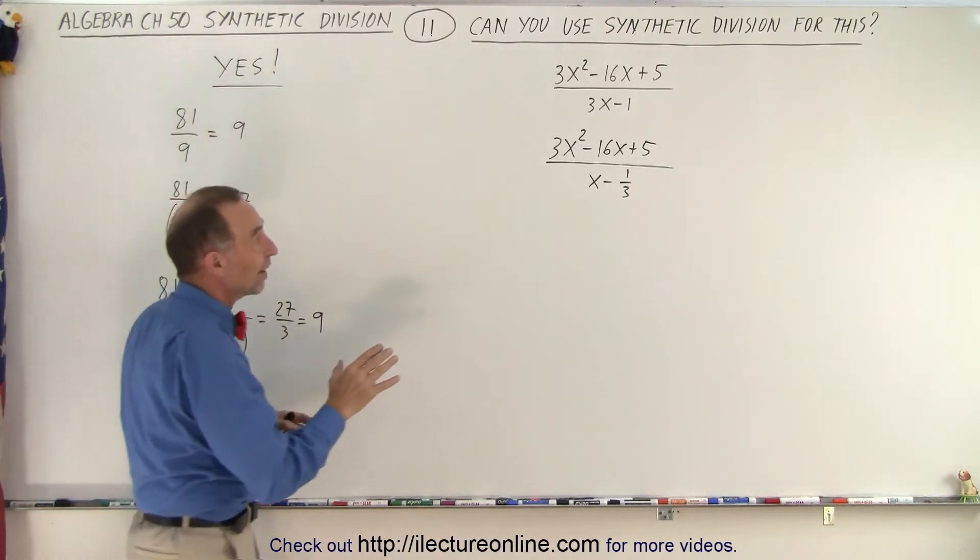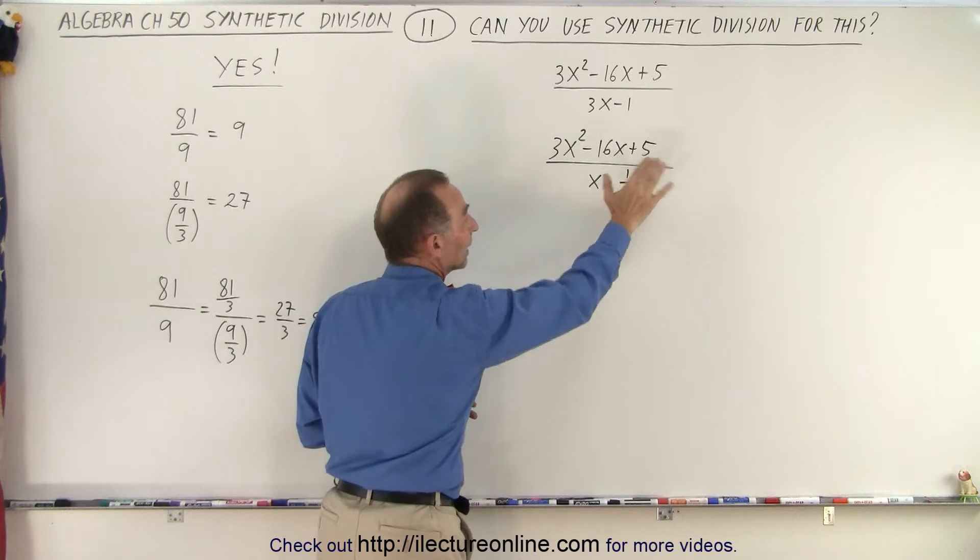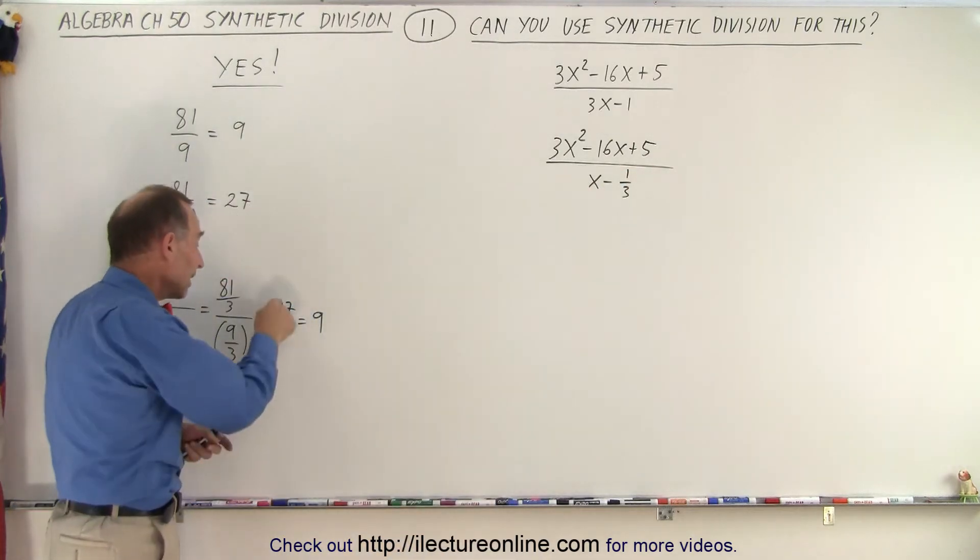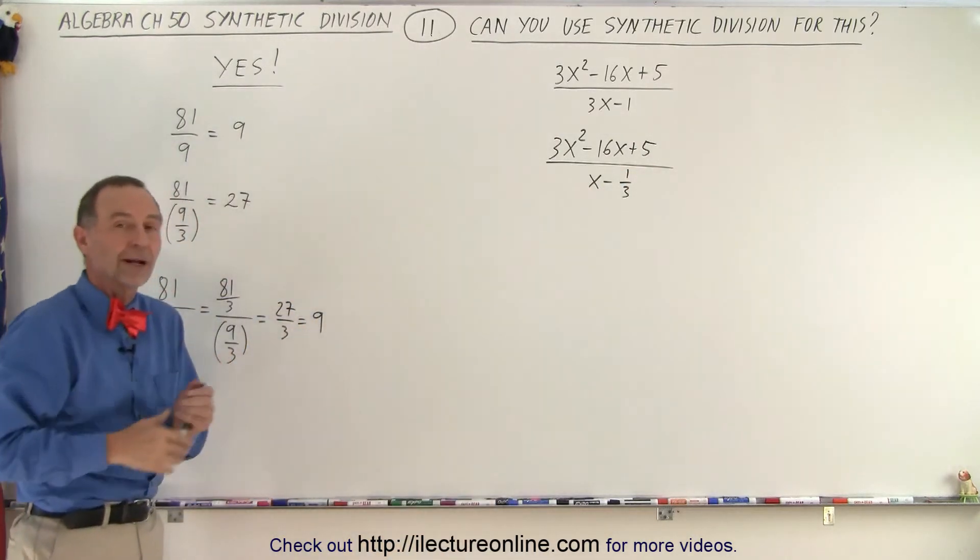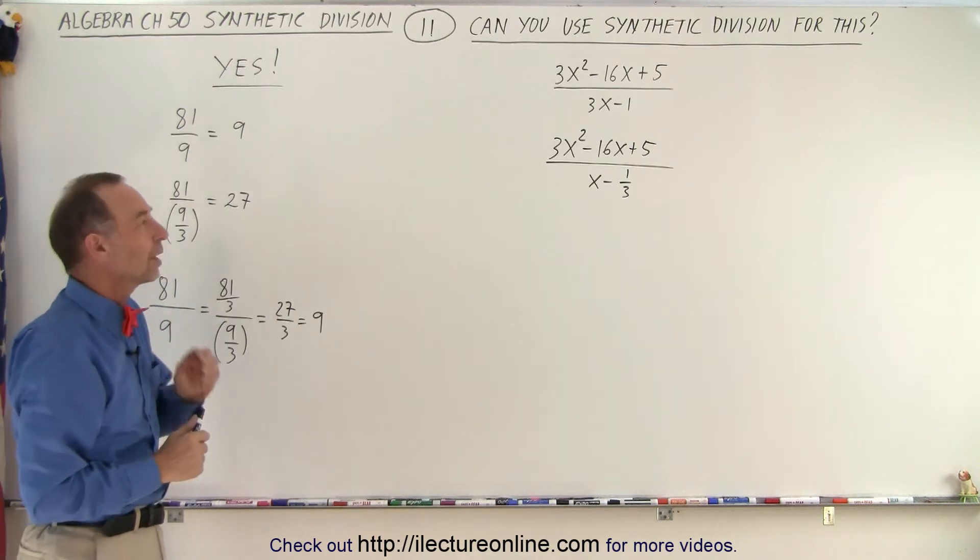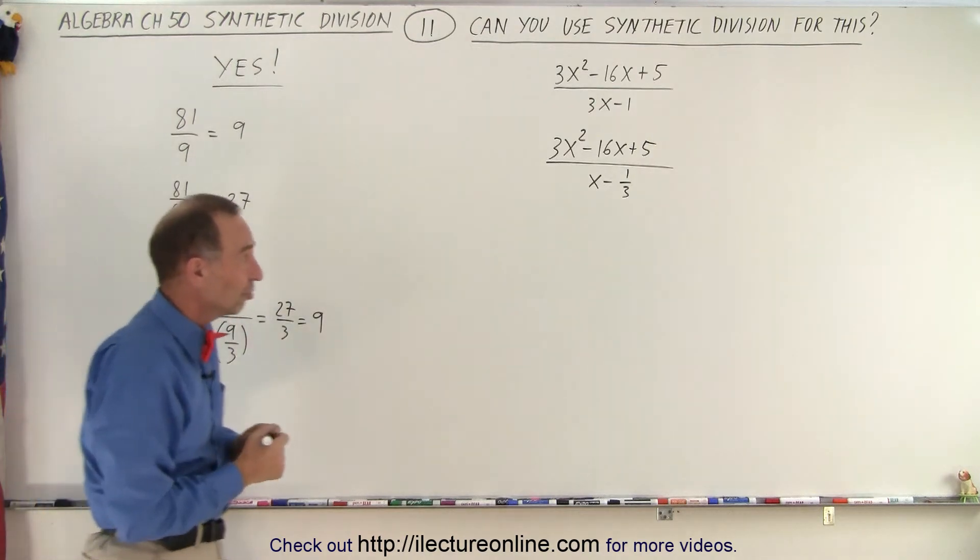In other words, if I divide the denominator by 3, I'll get an answer that's 3 times as big, and then I simply take the answer, divide it by 3, and I get the right answer. And so that's how we can do that. So let's go ahead and finish the problem.